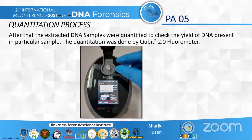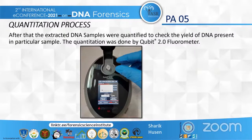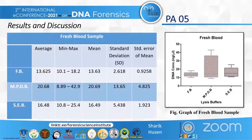After extraction, the DNA samples were quantified to check the yield of DNA present in each sample. Quantitation was done using the Qubit 2.0 fluorometer, in which the HS buffer and the particular dye were used along with the sample. The extracted DNA samples were introduced and the yield of each sample was obtained.